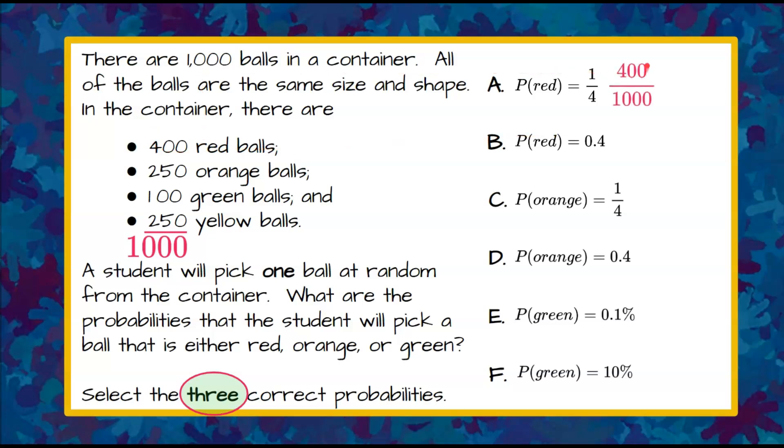So our ratio is 400 red to 1,000 in the container. If I simplify this I'm going to get 2/5. Divide by 100, we get 4/10, both divisible by 2 equals 2/5, and that is not equivalent to 1/4. Therefore this is not a correct answer.